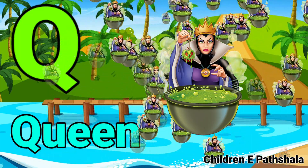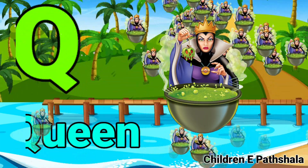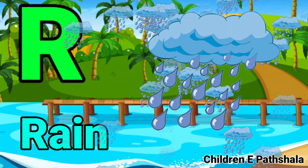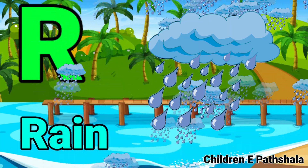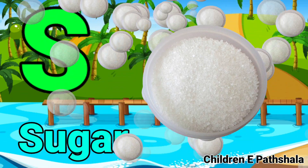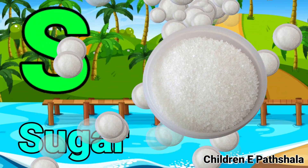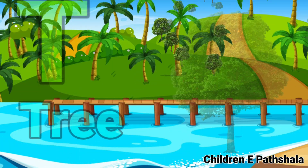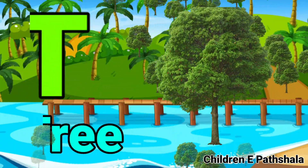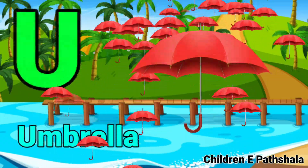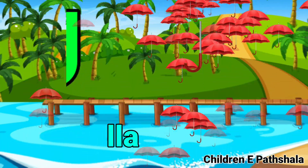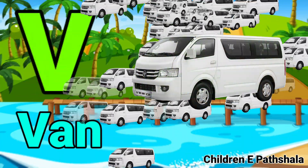Q for Queen, R for Rain, S for Sugar, T for Tree. U for Umbrella, V for Van.